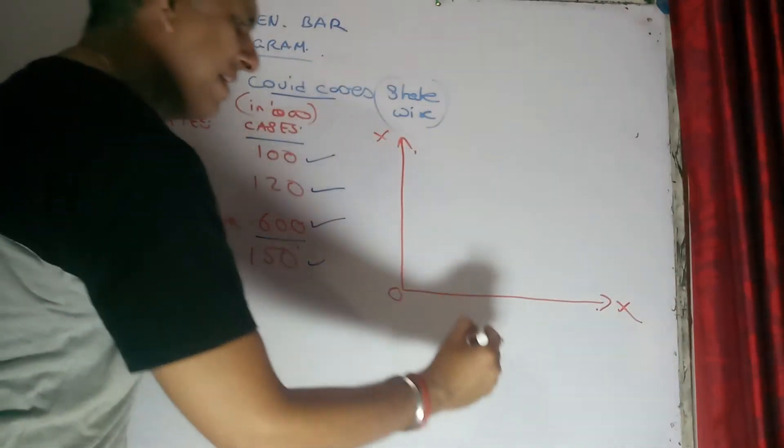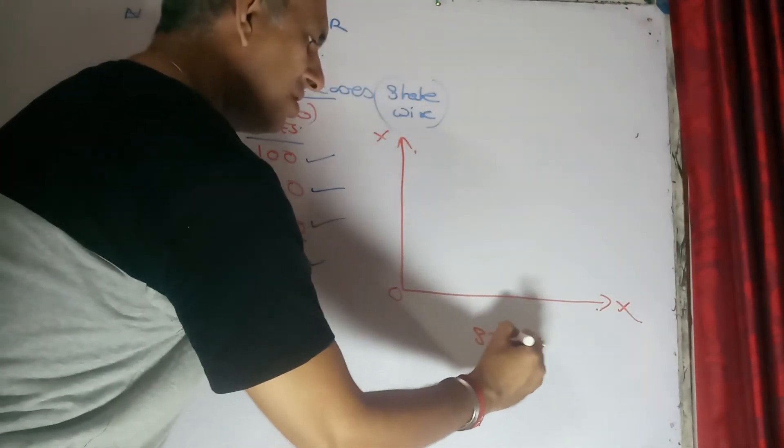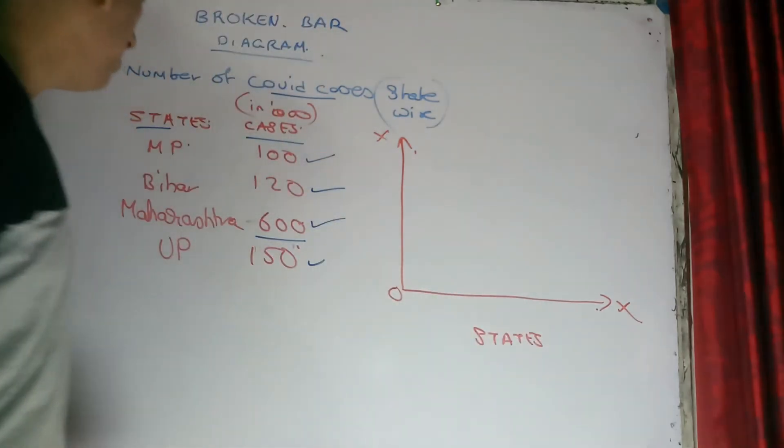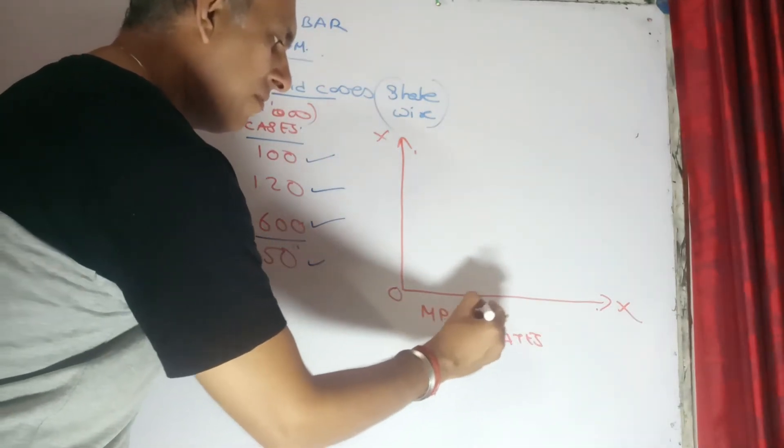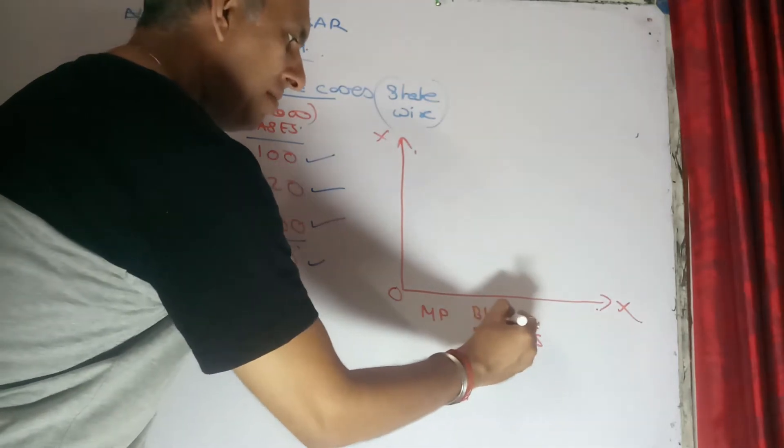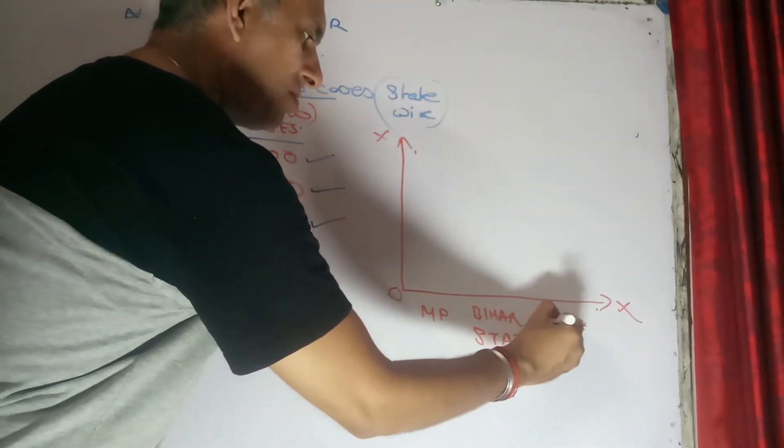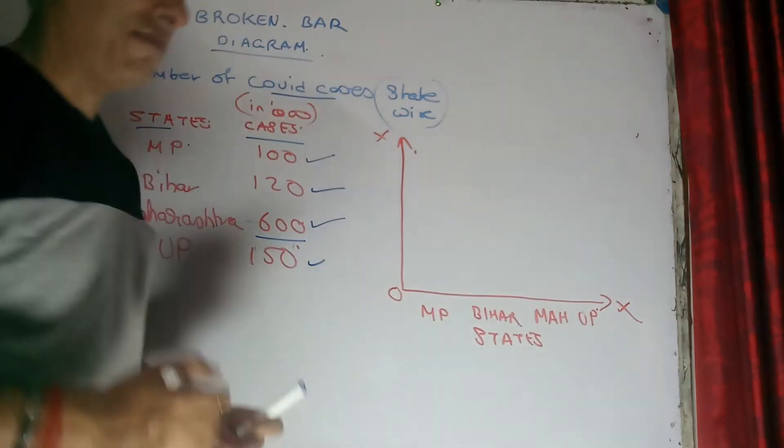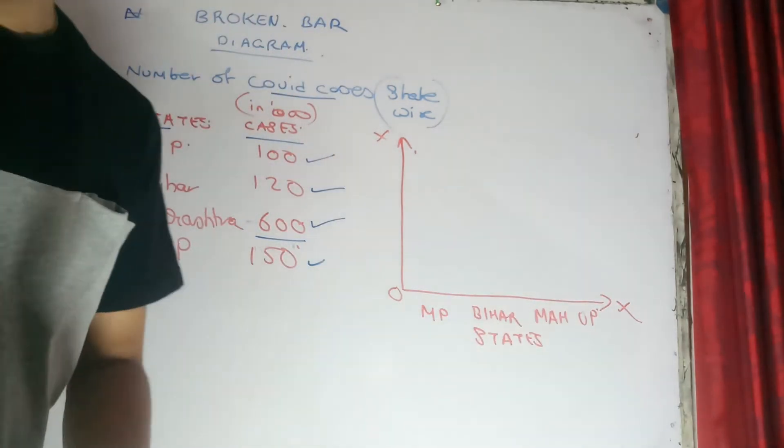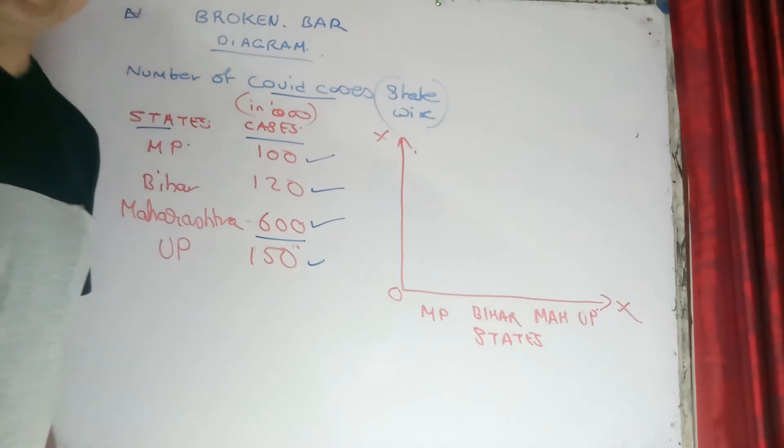On X axis, we can take the states for consideration, which is the first one, MP followed by Bihar, followed by Maharashtra. And last but not the least is the state which has given maximum prime ministers, UP. Let's move ahead.